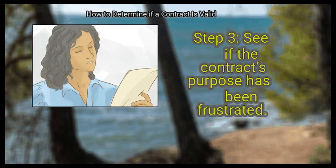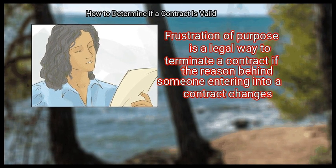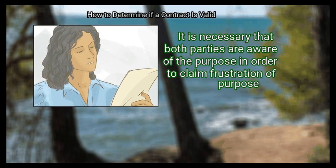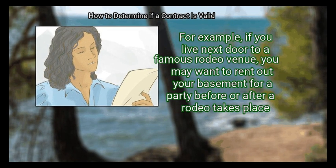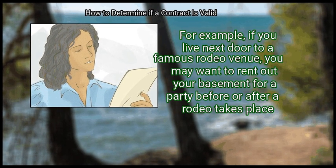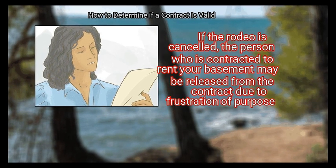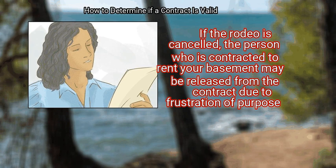Step 3: See if the contract's purpose has been frustrated. Frustration of purpose is a legal way to terminate a contract if the reason behind someone entering into a contract changes. It is necessary that both parties are aware of the purpose in order to claim frustration of purpose. For example, if you live next door to a famous rodeo venue and rent out your basement before or after a rodeo, and the rodeo is cancelled, the person contracted to rent your basement may be released from the contract due to frustration of purpose.